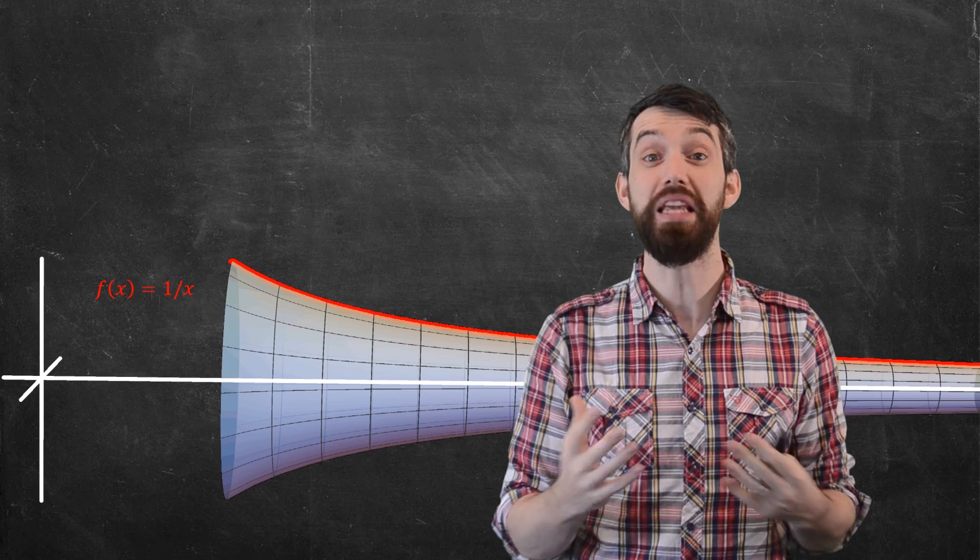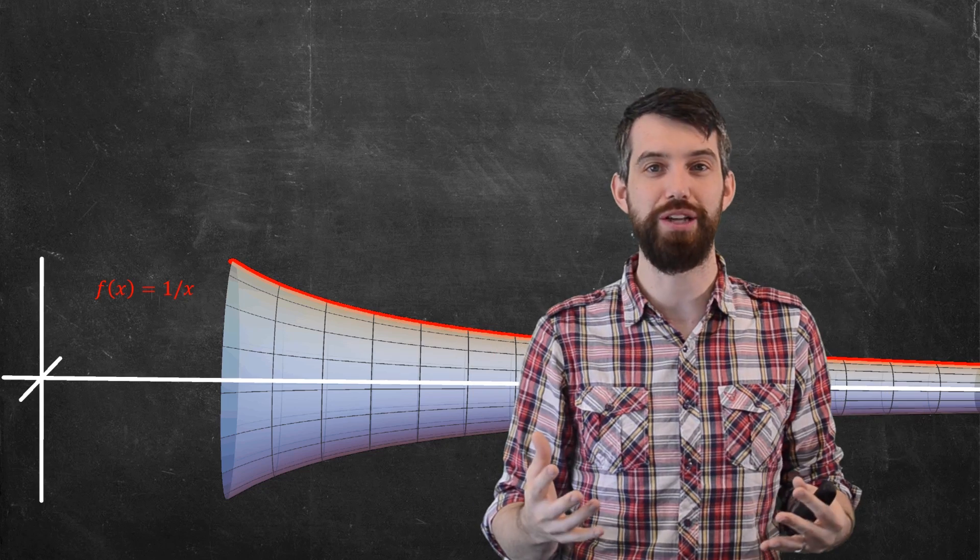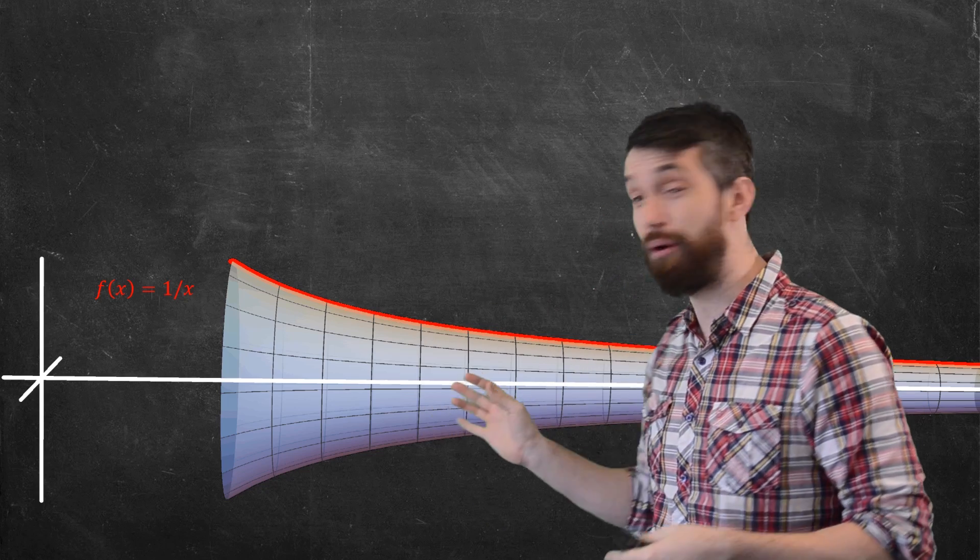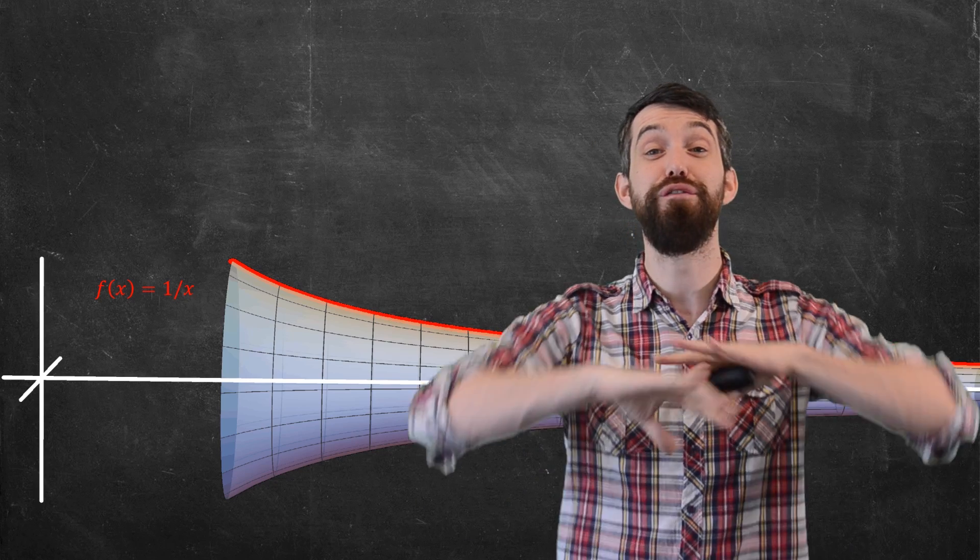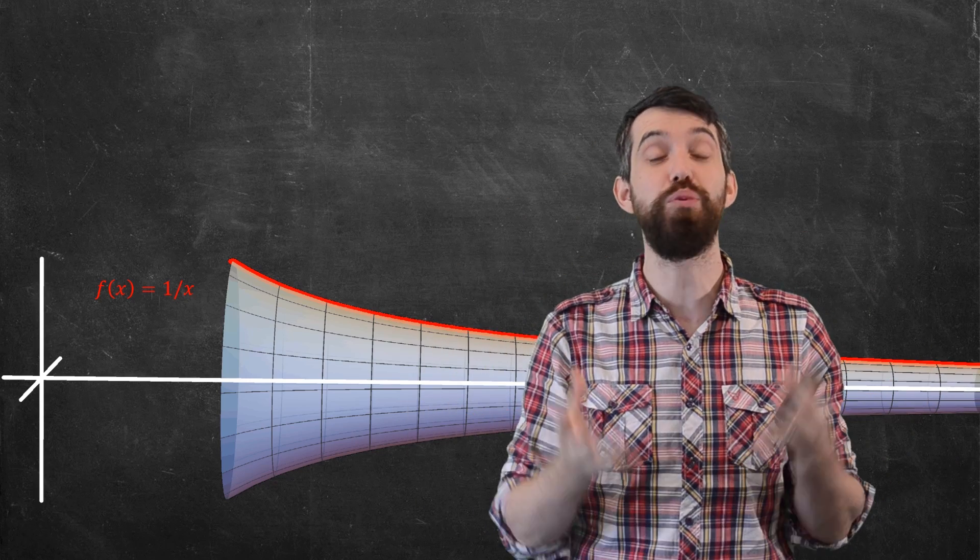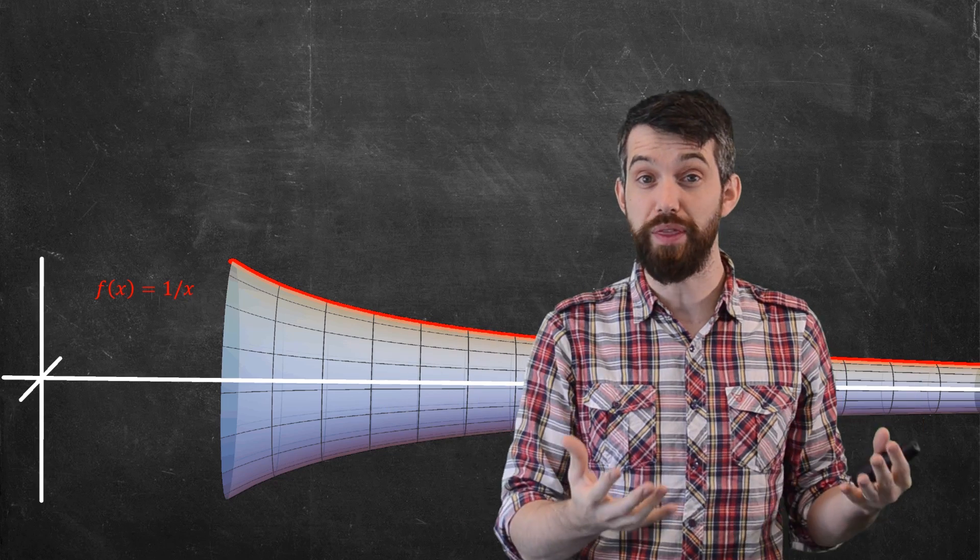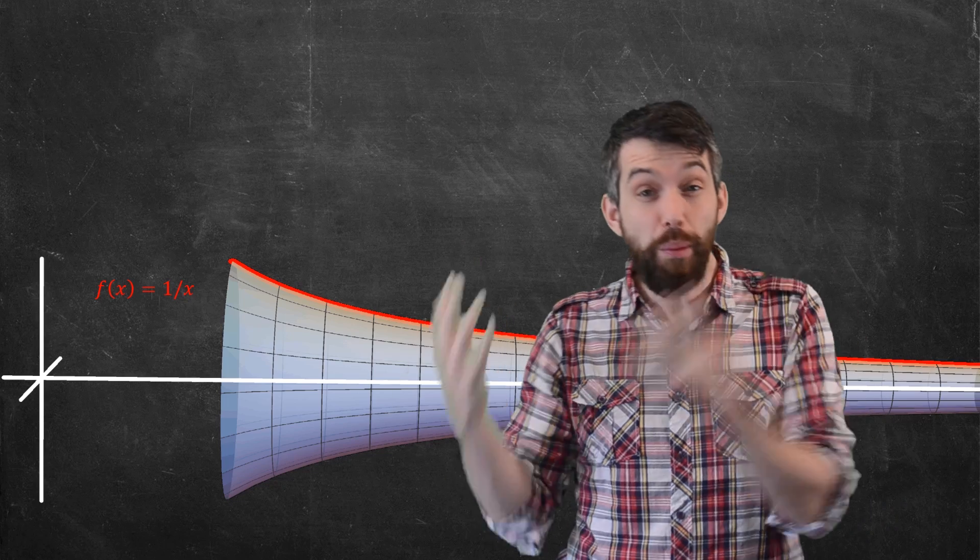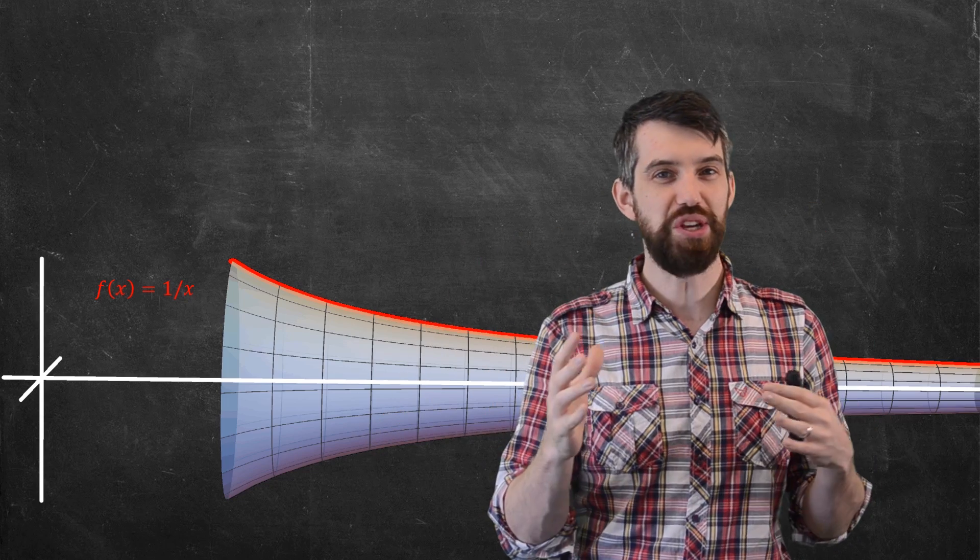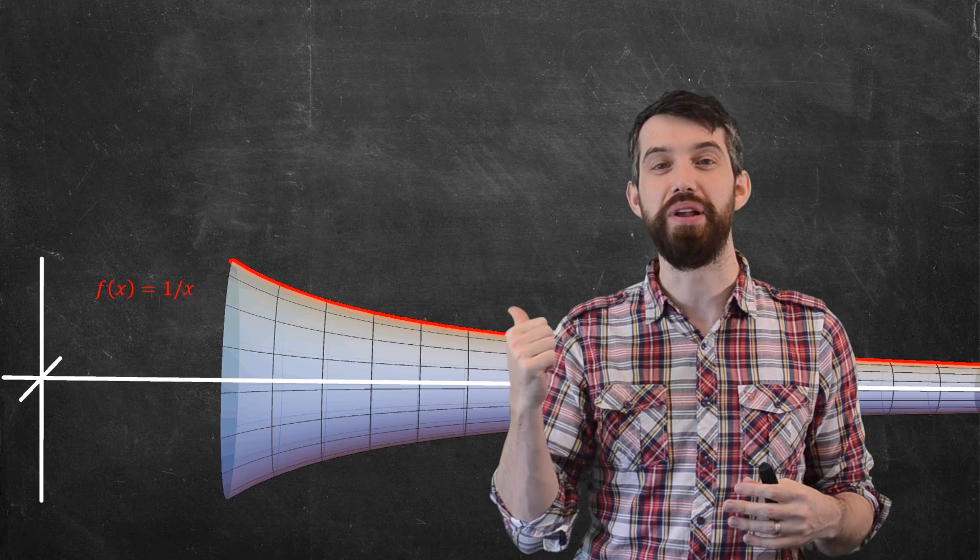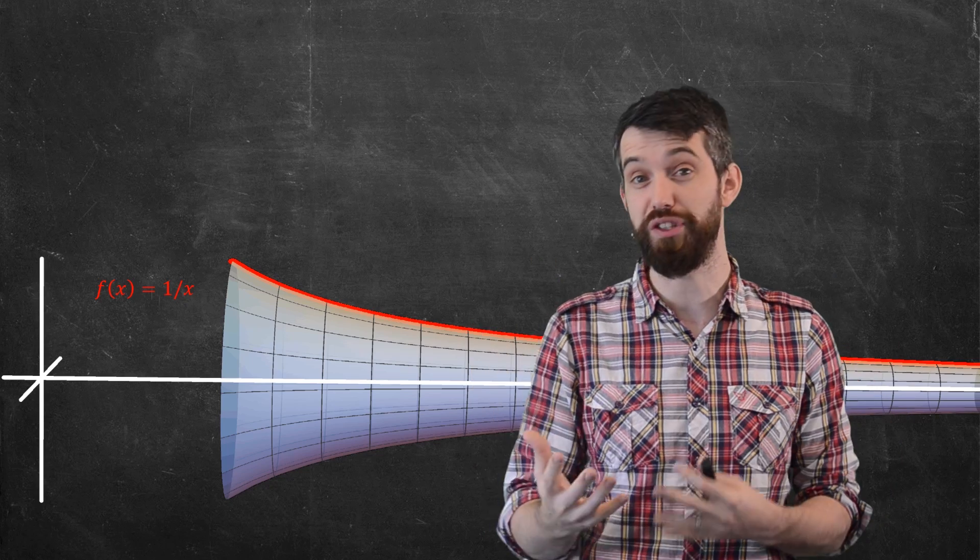Now I find this surface really interesting because of the following fact. There's two different types of things I might want to measure. I might want to measure the surface area of this infinite horn. Or I might want to measure the volume that is inscribed within that surface. These are two different computations. Now when we first started with improper integrals where the domain was infinite, we saw that sometimes they converge and sometimes they diverged.